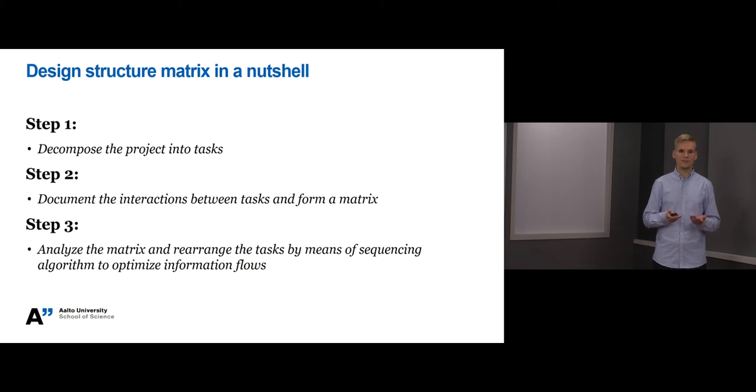Forming a design structure matrix consists of three main steps. First you decompose the project into tasks. Second you document the interactions between tasks and form a matrix. Third you analyze the matrix and rearrange the tasks by means of sequencing algorithm to optimize information flows.